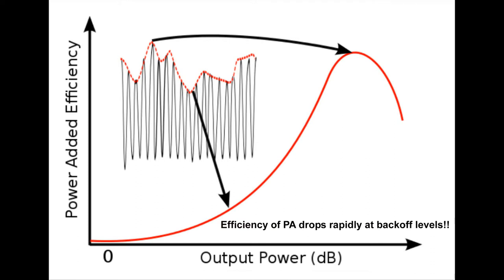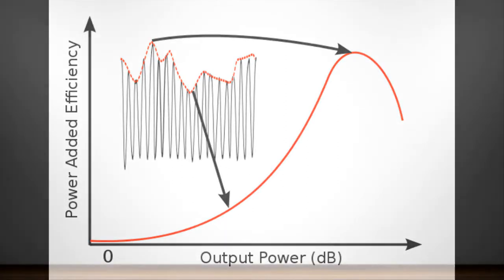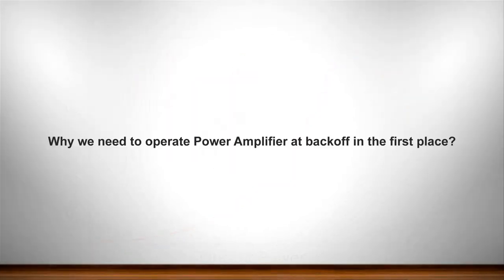This means that if the input signal is changing and the corresponding output power levels are also changing, the average efficiency is very low of such a power amplifier in the case if the signal is amplitude modulated. This is the fundamental motivation that we need to have power amplifiers with good back-off efficiency. Now the question comes: why we need high back-off efficiency in the first place?